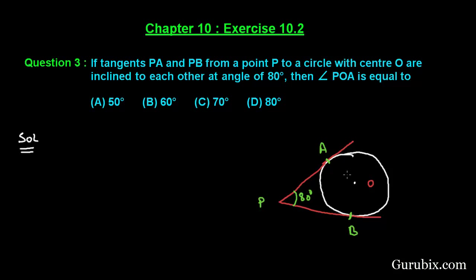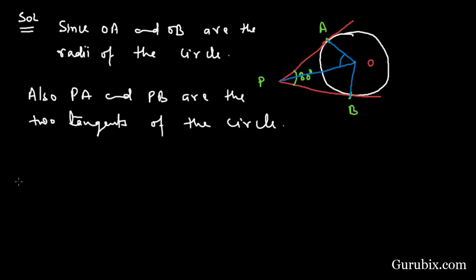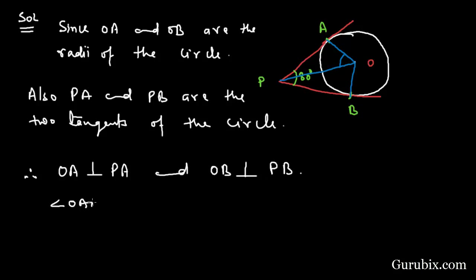We have to find out the angle POA. We have joined OB also. We are given that OA and OB are the radii of the circle, and PA and PB are the two tangents of the circle. Therefore OA is perpendicular to PA and OB is perpendicular to PB. Therefore angle OAP is equal to 90 degrees and angle OBP is equal to 90 degrees.